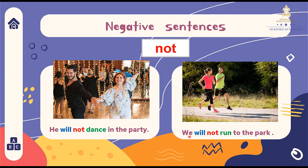Another example: We will not run to the park. Tenemos 'not' en medio de will y el verbo run. Nosotros no corremos hacia el parque. We will not run to the park. We can also use 'won't', joining the auxiliary will with not. He won't dance in the party. Él no bailará en la fiesta. We won't run to the park. Nosotros no corremos hacia el parque.